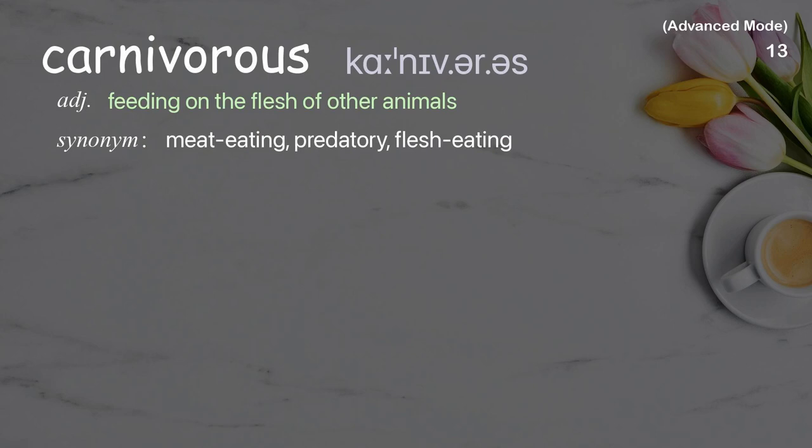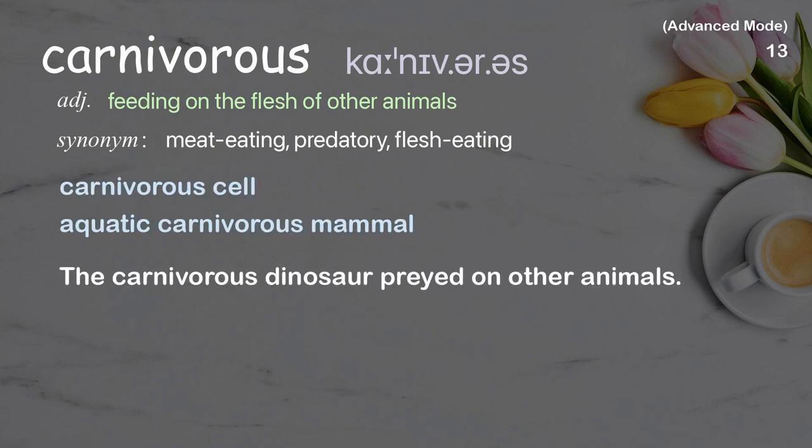Carnivorous: feeding on the flesh of other animals. Examples: a carnivorous bird, carnivorous cell, aquatic carnivorous mammal. The carnivorous dinosaur preyed on other animals.